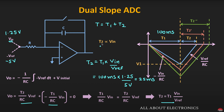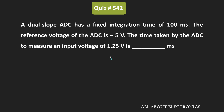The overall conversion time for this dual slope ADC is T1 plus T2, which equals 100 milliseconds plus 25 milliseconds, giving 125 milliseconds. So for the given dual slope ADC, when the input voltage is 1.25 volts, the time taken to convert that voltage is 125 milliseconds. Therefore, the answer is 125 milliseconds.